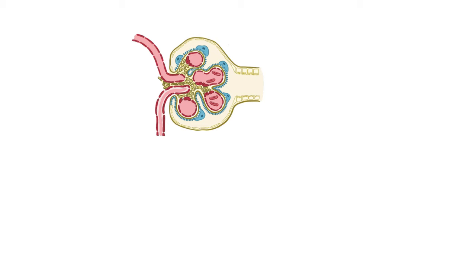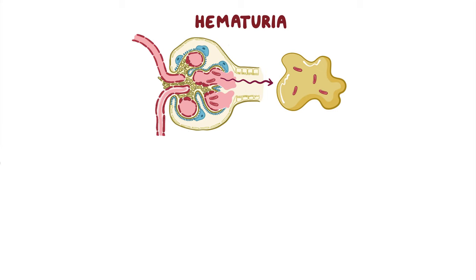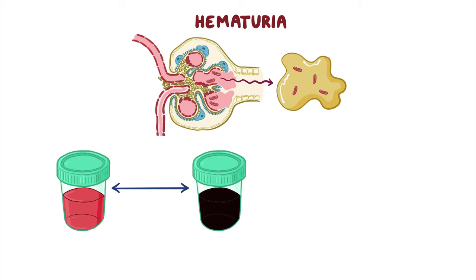Because of the glomerular injury, red blood cells leak into the urine, causing hematuria. The amount of blood is sometimes enough to cause reddish or blackish discoloration of the urine. Protein leaking into the urine causes proteinuria, and may make the urine appear foamy.